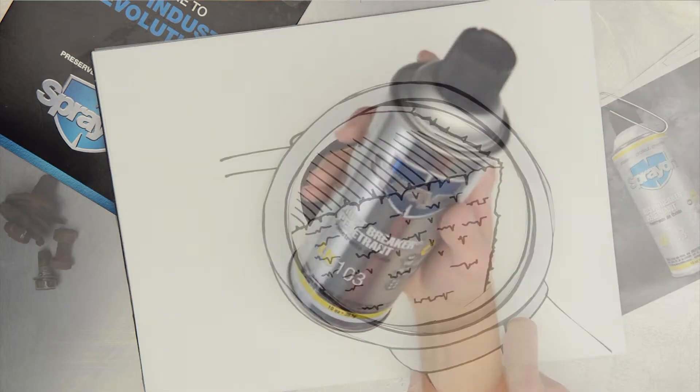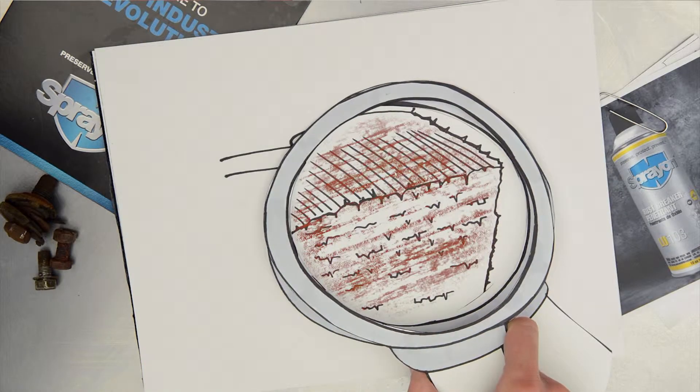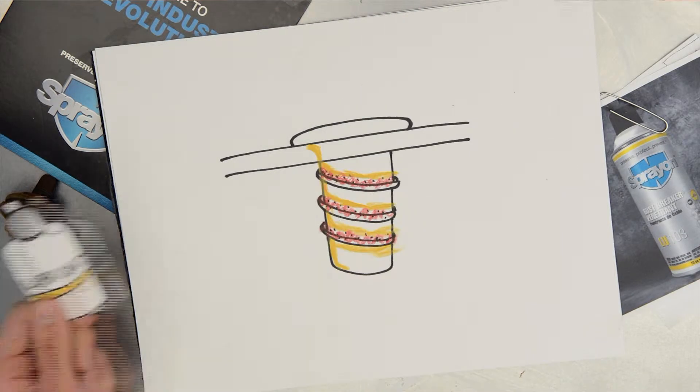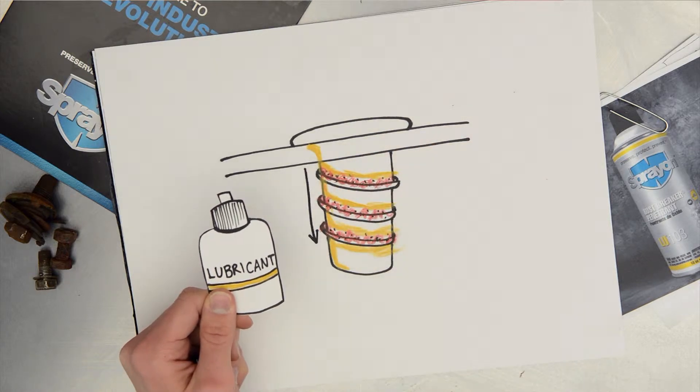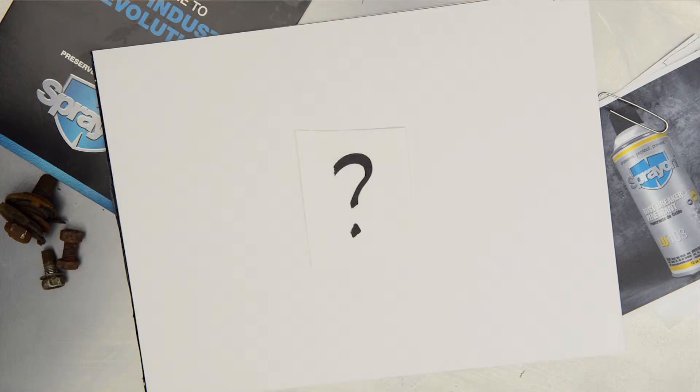Penetrating lubricants chemically dissolve rust while lubricating damaged threads. But the trick is to get the penetrant deep inside the rusted fastener. So what is it that makes a penetrant lubricant get into these incredibly small irregularities?